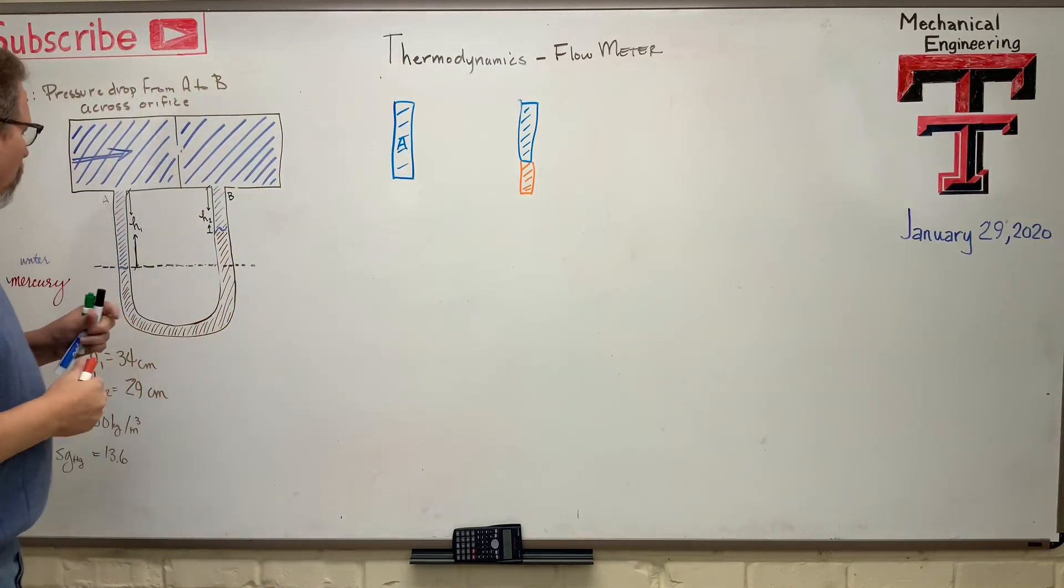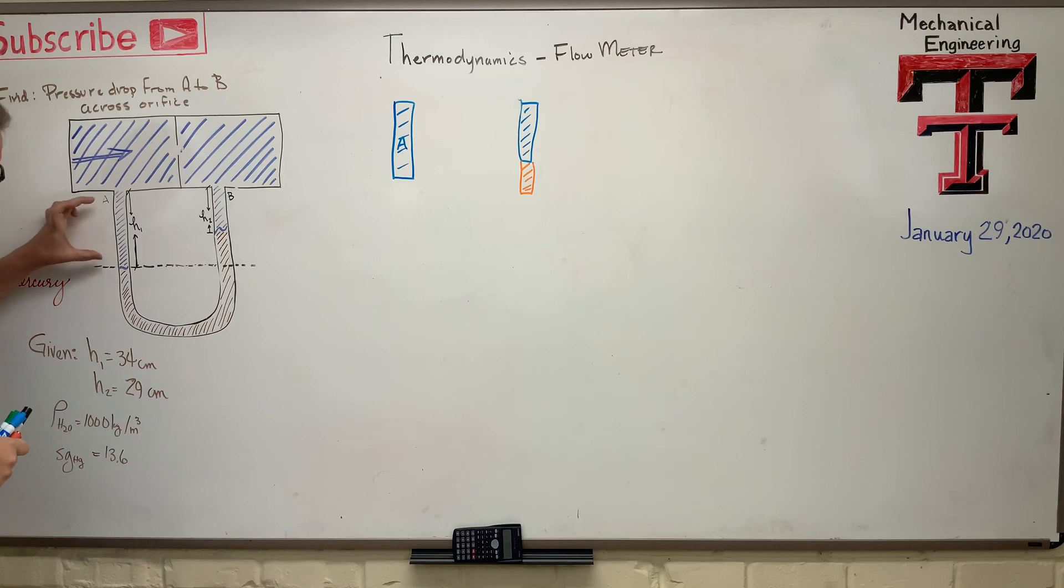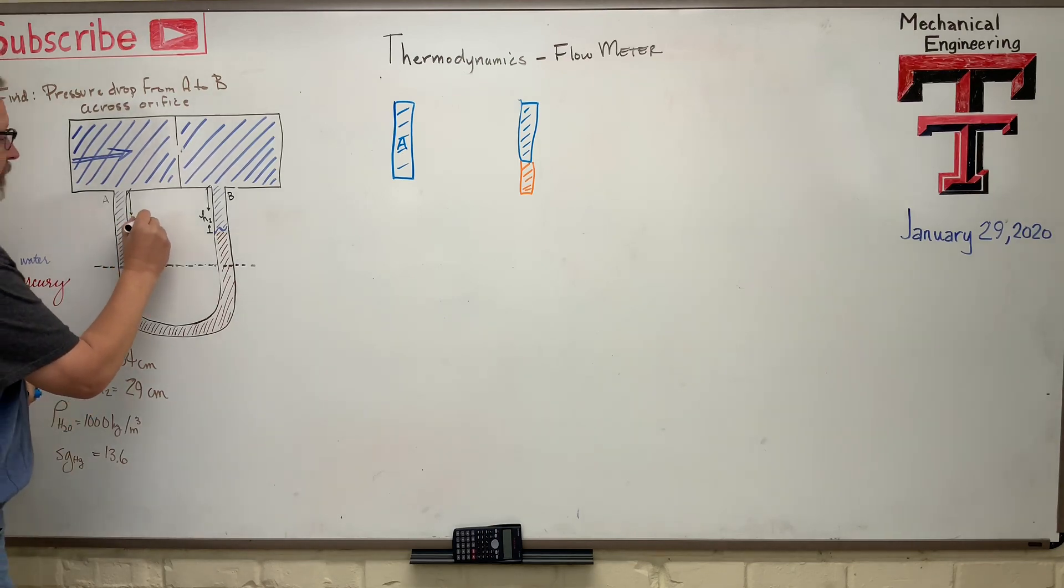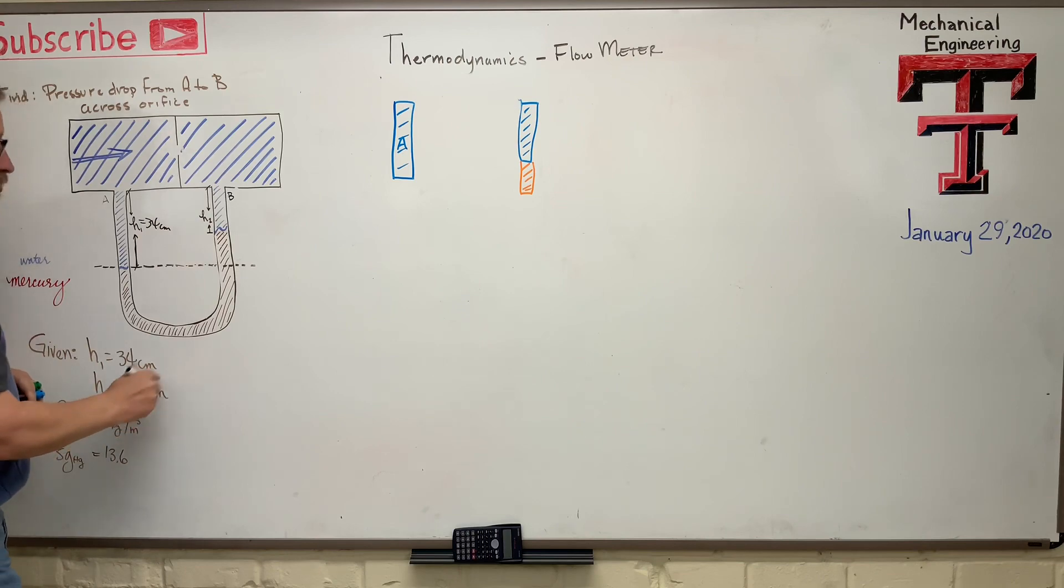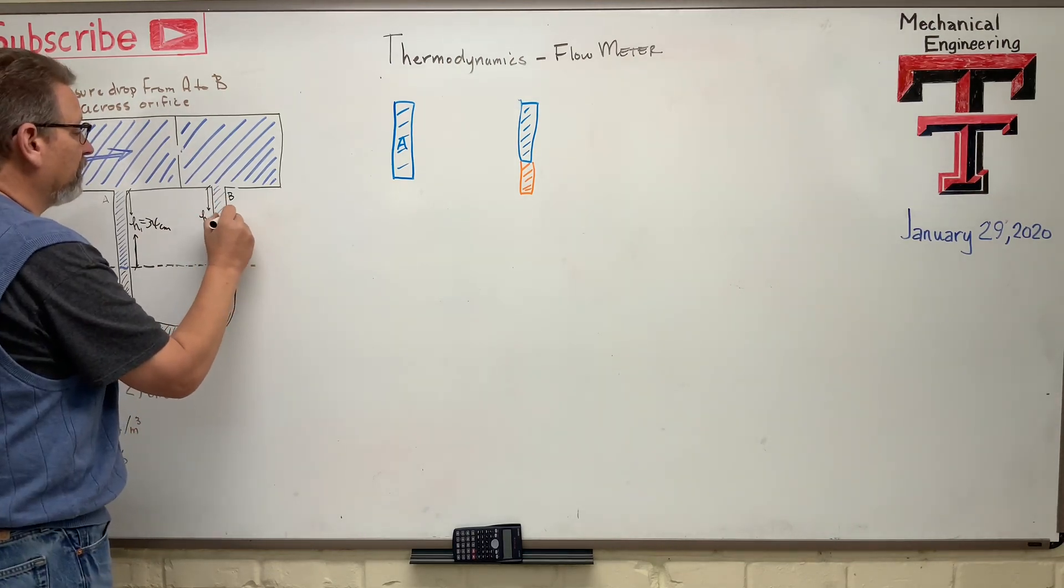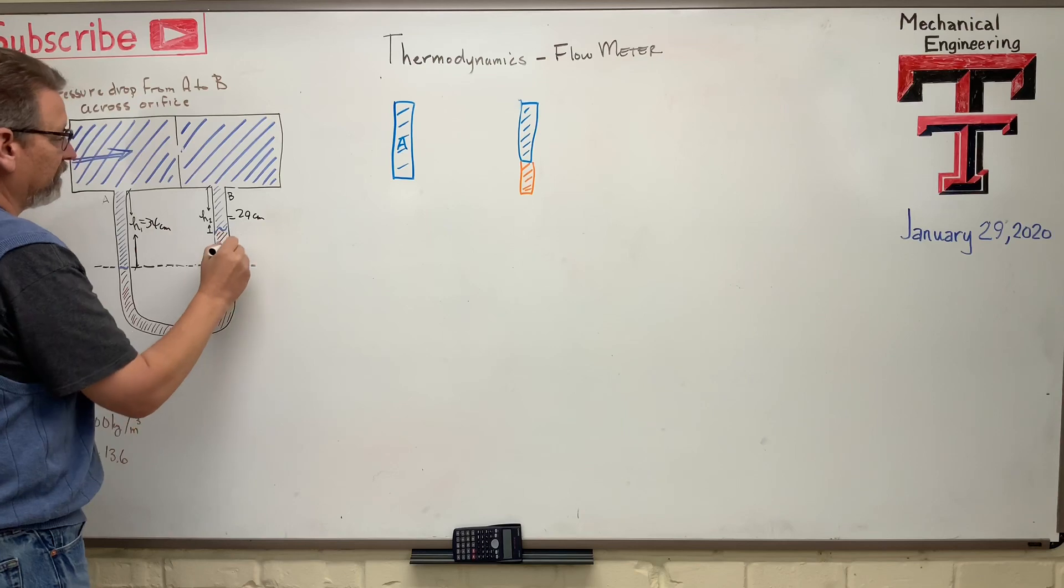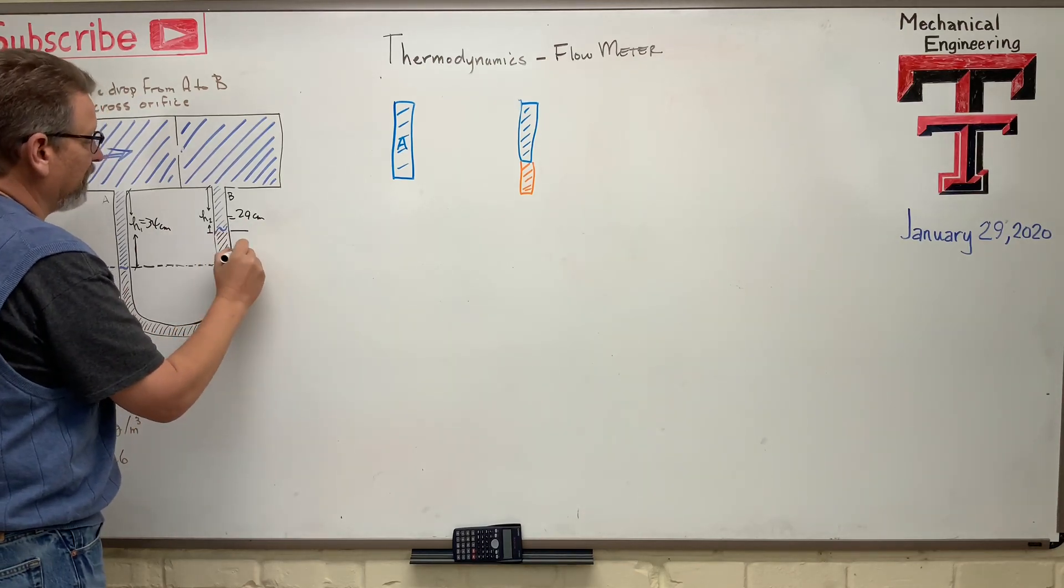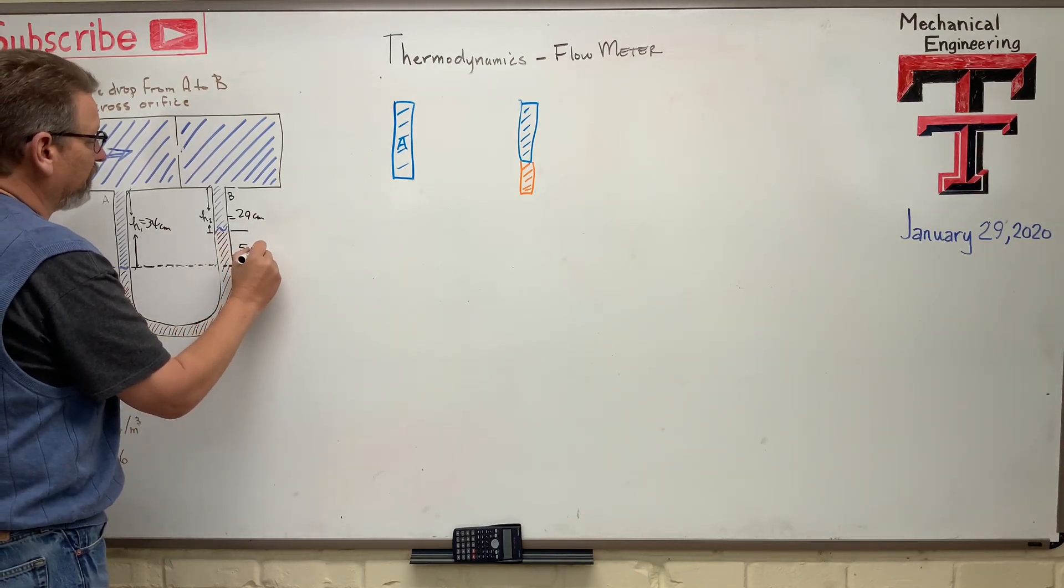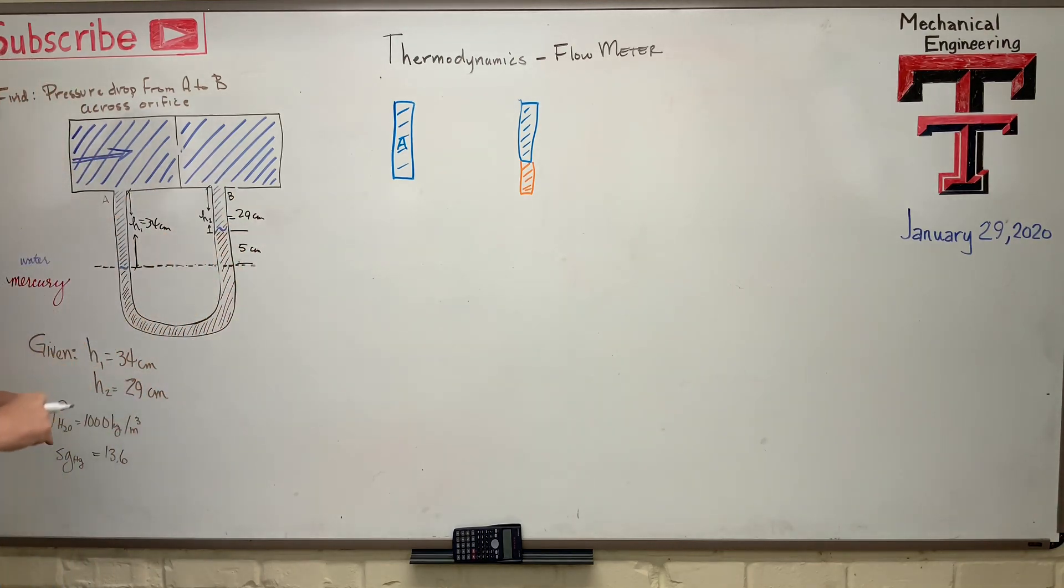And then we have a side B, which is over here, which is water here. But then it has a little mercury under that. There we go. And what are we given here? We're given that the height here is H1, it's 34 centimeters. I guess we could write that on there. So this guy, 34 centimeters. And H2 is 29 centimeters. So this guy over here, 29 centimeters, which means that this here, the height of the mercury has got to be five centimeters, doesn't it? If that's 29, because it's got to equal 34. Then I'm given the density of water and the specific gravity for mercury.